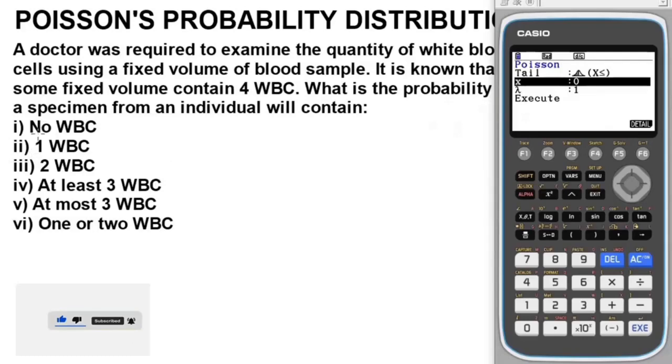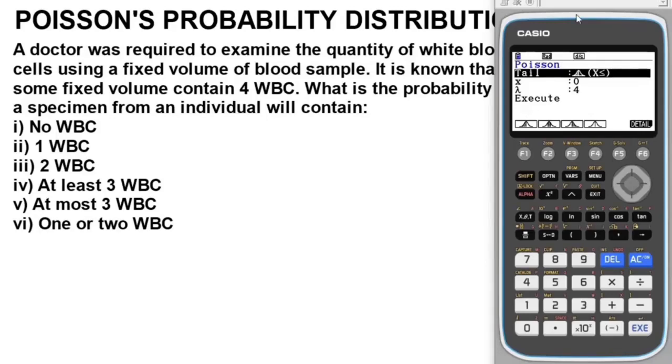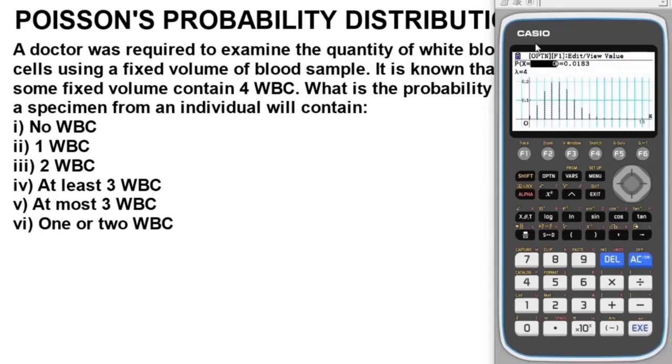Let's begin solving the problem. They ask what's the probability that a specimen from an individual contains no white blood cells. So here x should be zero, and lambda is 4. When x is less than or equal to something, we're going to solve when x is an equality. To put an equality sign for x, I'm going to press F4. This is the probability that a specimen from an individual contains no white blood cells: 0.0183.